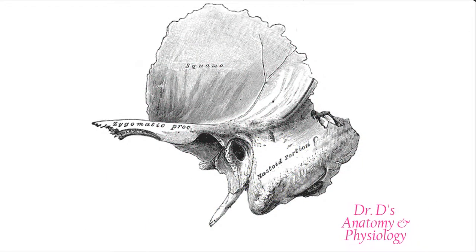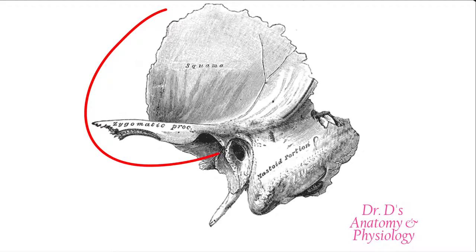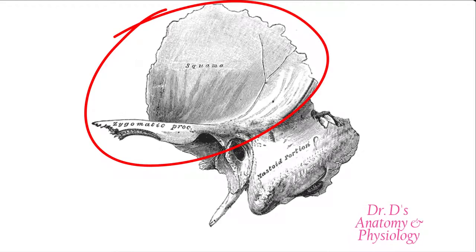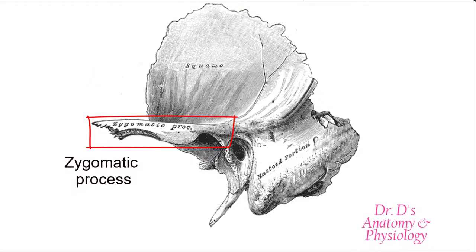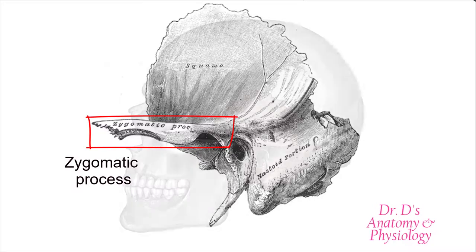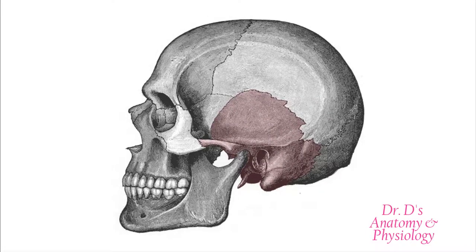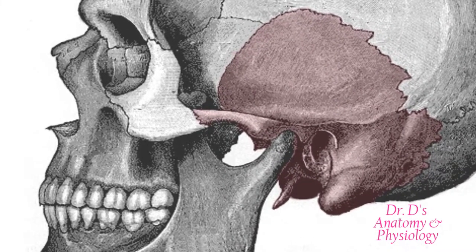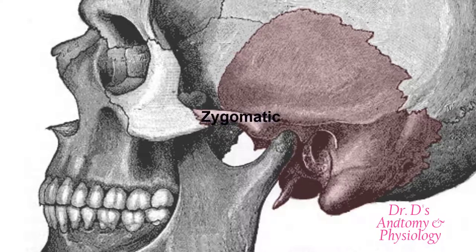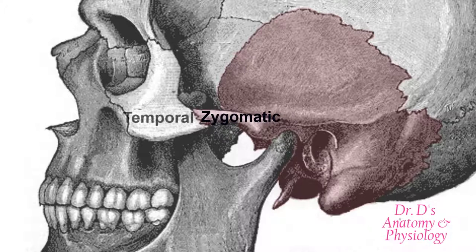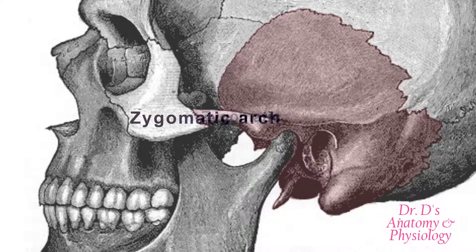Here we have the bone at maturity using a Gray's Anatomy figure. We look first at the squamous portion, called the squamous portion because it is flat like a scale — a squama. It is going to have the zygomatic process. In the fully articulated skull, the zygomatic process articulates anteriorly with the temporal process of the zygomatic bone, and together they form the zygomatic arch.